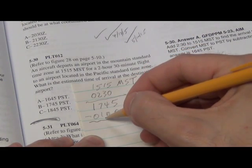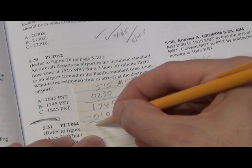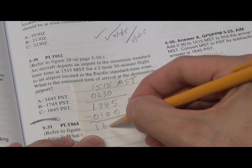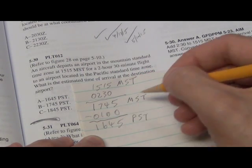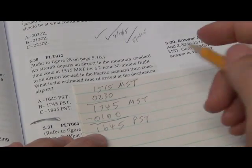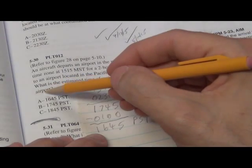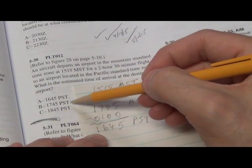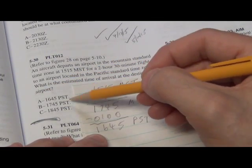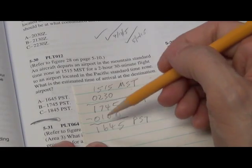So what we have here is 1, 6, 4, 5 Pacific Standard Time. And it says here, what is the estimated time of arrival at the destination airport? And you can see the choices here are only in Pacific Standard Time. So let's see if we have a match. 1645.